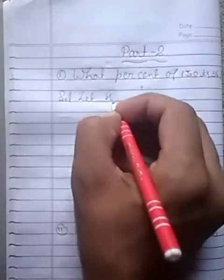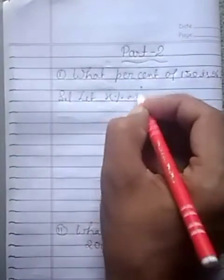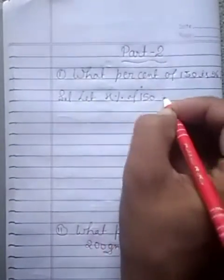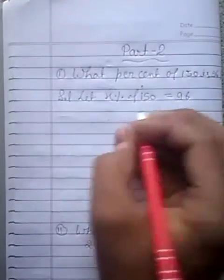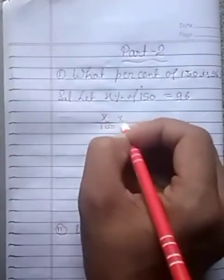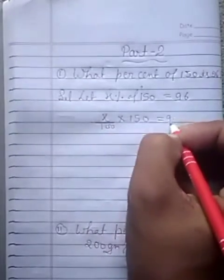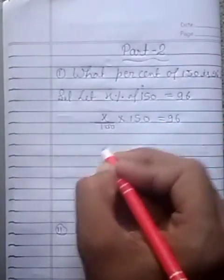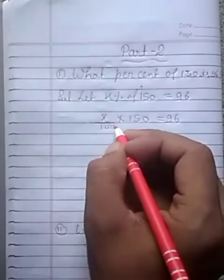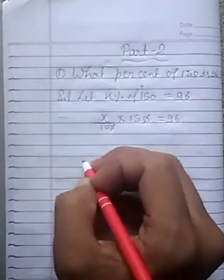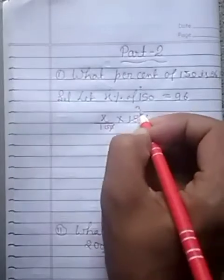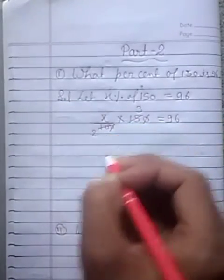Let x percent of 150 is equal to 96. x upon 100 into 150 is equal to 96. 0 to 0 cancel. 5 threes are 15 and 5 twos are 10.